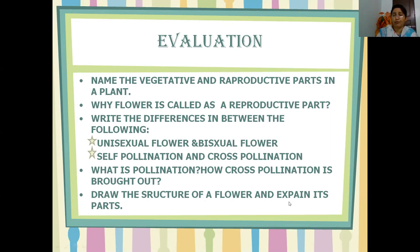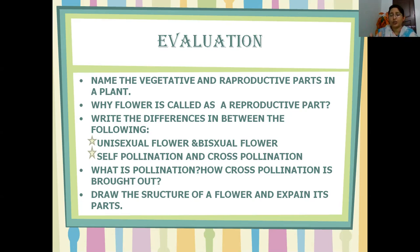Next question — draw the structure of a flower and explain its parts. A flower has its parts in whorls: the outermost whorl is the sepal, the next whorl is the petals, the third whorl is the stamens, and the innermost whorl is the pistil or carpel or gynoecium. Explain each part and its importance. I hope you have understood today's session. Try to answer all these questions on your own and get them corrected from your teachers. Thank you for watching my class.